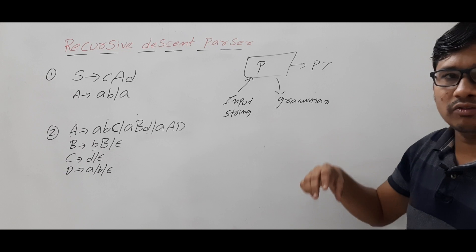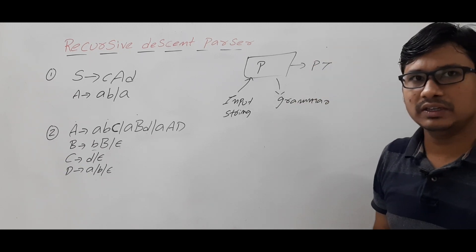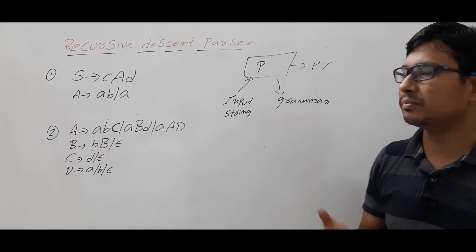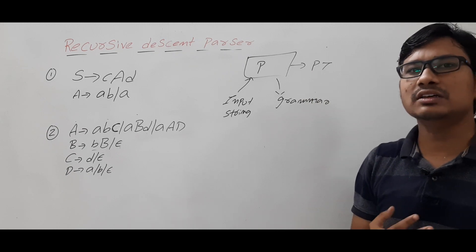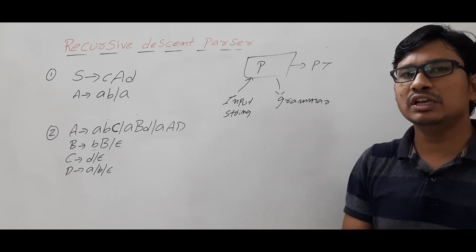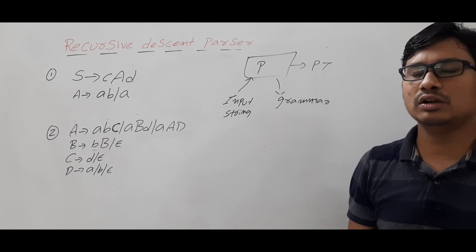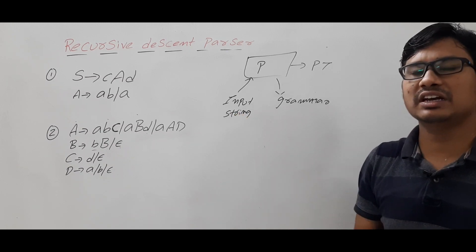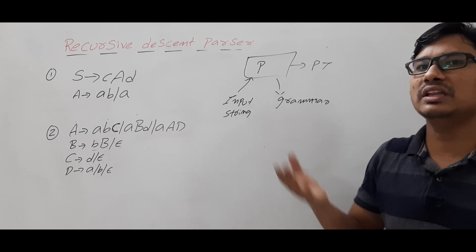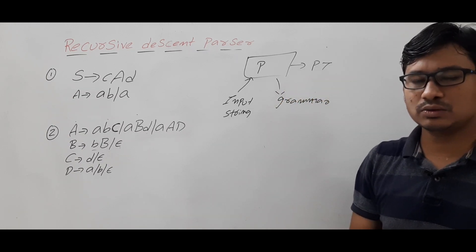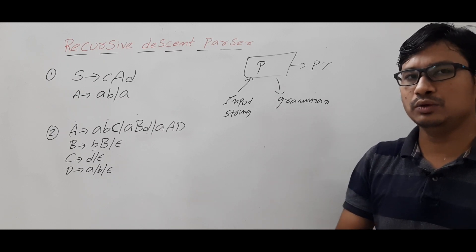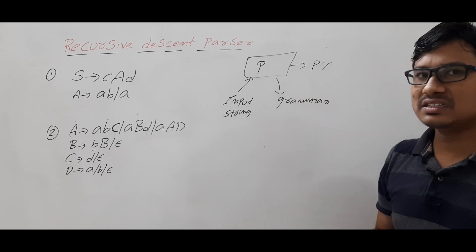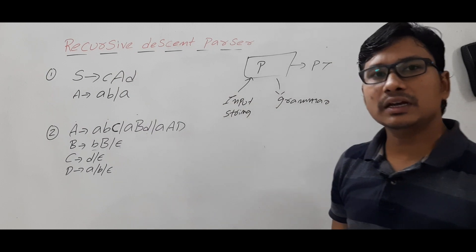The main thing that varies between parsers is how the parse tree is constructed. The recursive descent parser uses the brute force mechanism and backtracking mechanism to generate the parse tree. Other parsers — such as LL(1) and LR(0) — use tables: first they construct a table, then use that table to construct the parse tree. The recursive descent parser does not construct any table; it uses backtracking and brute force to construct the parse tree.